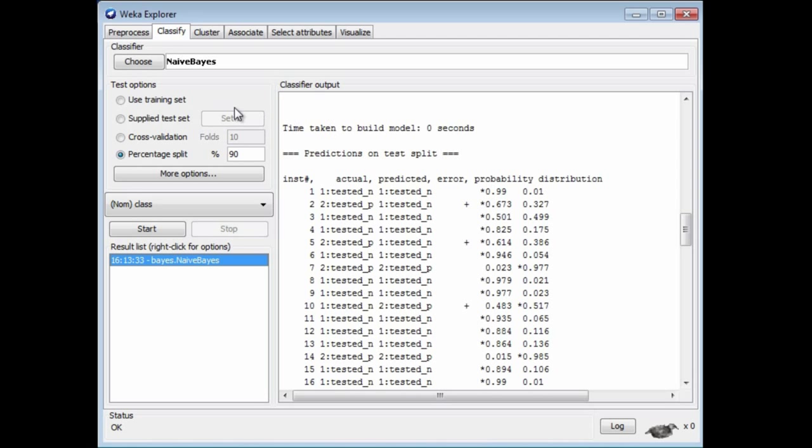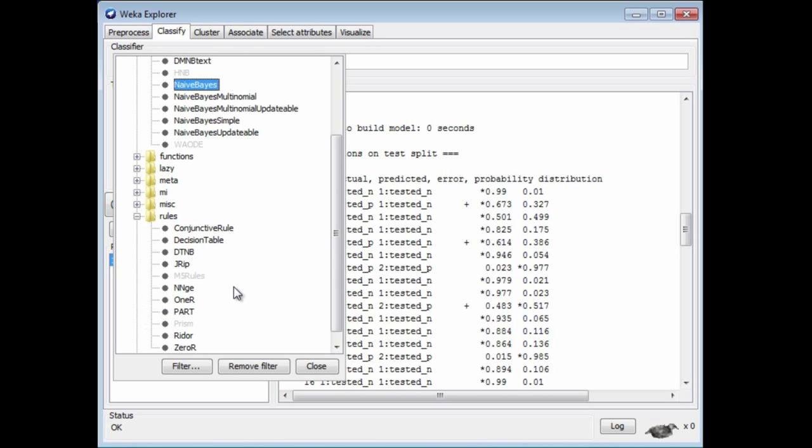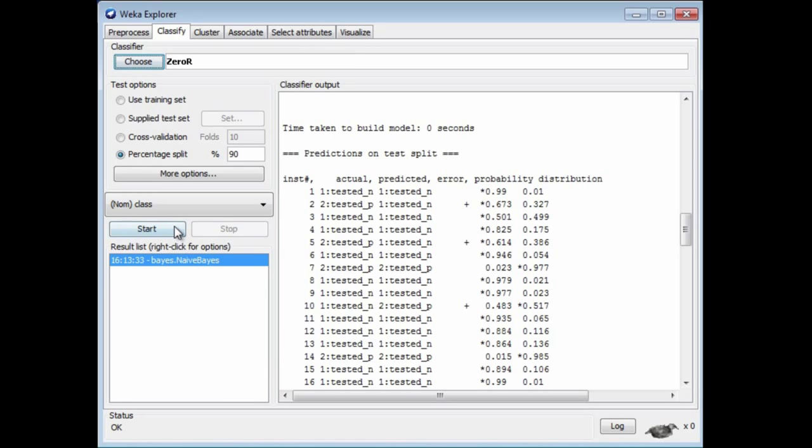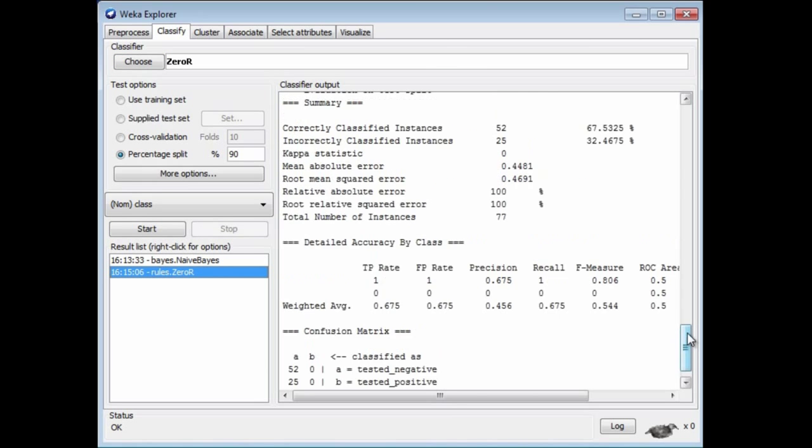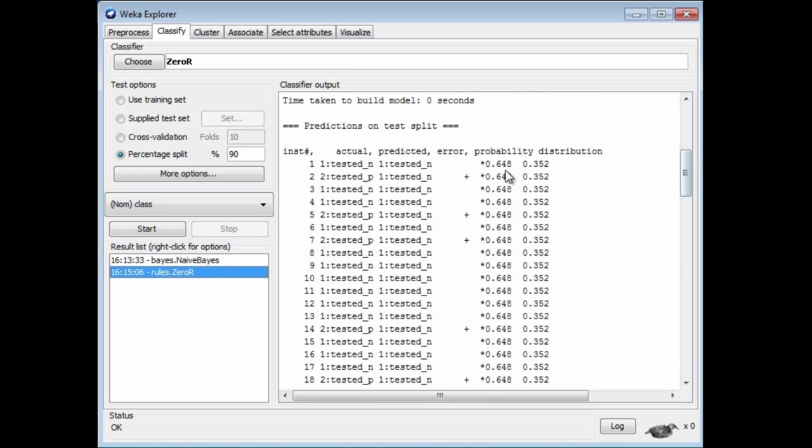Other data mining methods produce probabilities as well. If I look at ZeroR and run that, then these are the probabilities: 0.65 versus 0.35. And this is the same, this is the same, and this is the same. Of course, it's ZeroR. It always produces the same thing.